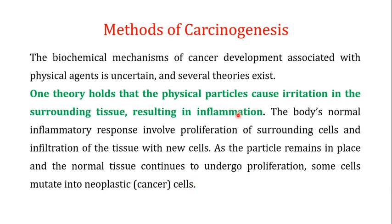To summarize how carcinogens generally cause cancer in living systems: first, they can cause inflammation in the living organism, and that inflammation is responsible for causing cancer. Second, there can be direct DNA damage, and that direct DNA damage is responsible for causing cancer. So these are the two main phenomena responsible for causing cancer: one is inflammation, and the second is damage to the DNA.